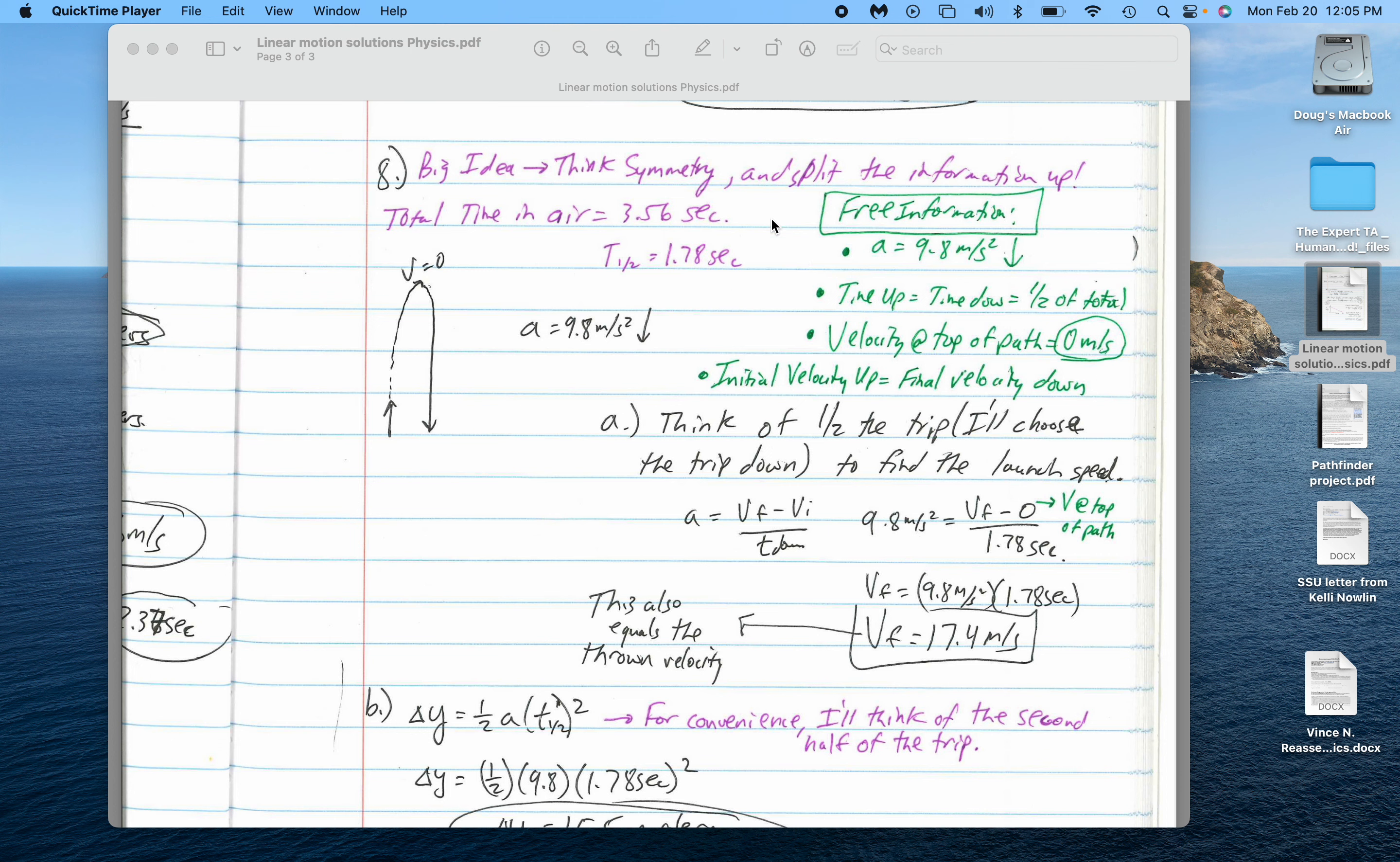For example, the reason that the speed of this thing, or the velocity rather, would change is due to the constant acceleration downward. That's free information.